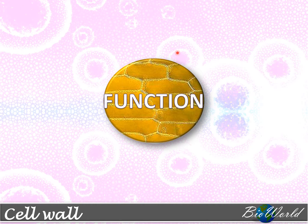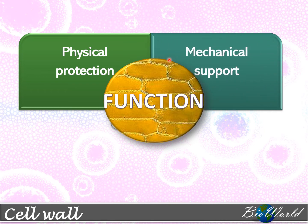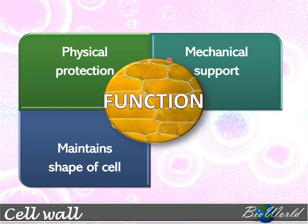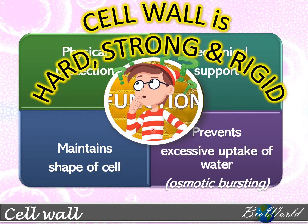The cell wall is an important cellular component for the plant cell. It is able to provide physical protection, provide mechanical support, maintain the shape of the plant cell, and also prevent a process known as osmotic bursting. When too much water diffuses into a cell via osmosis, it tends to push onto the plasma membrane. Fortunately, plant cells have a cell wall that prevents excessive uptake of water and protects the plant cell from bursting. This is all made possible because the cell wall is hard, strong, and rigid.